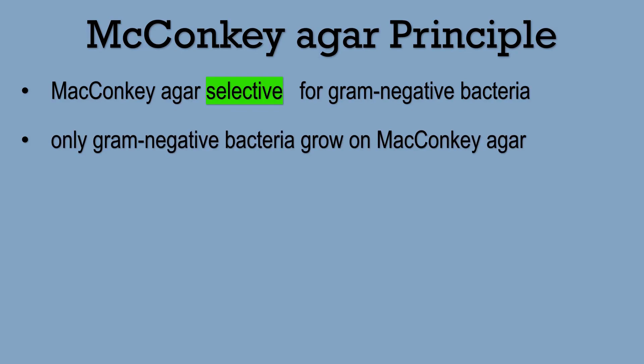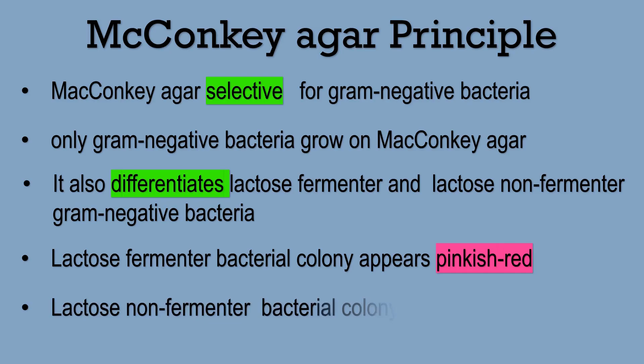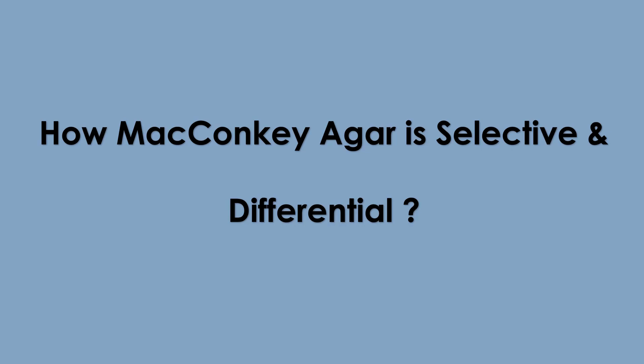Now let's discuss the principle of McConkie's Agar. McConkie's Agar is selective for gram-negative bacteria and favors the growth of only gram-negative bacteria. These gram-negative bacteria are further differentiated on the basis of their lactose fermentation ability. Lactose fermenter gram-negative bacteria appear pinkish red, whereas lactose non-fermenting bacteria appear as colorless colonies. This color change is due to the change in pH caused by acid production during lactose fermentation, detected by the pH indicator neutral red.